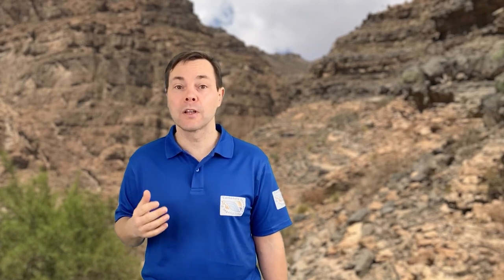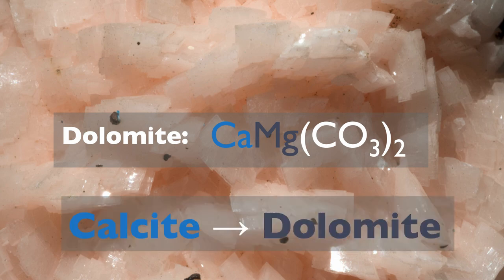You can precipitate dolomite straight from a fluid — that's known as a dolomite cement. But the vast majority, the biggest volume of dolomite you find in the rock record, was not precipitated straight out of a fluid. Instead, it's a replacement of the calcite in a limestone into dolomite. Effectively, you dissolve the calcite and locally re-precipitate a calcium-magnesium ion. So a source of magnesium is important for dolomitization — if you do not have the magnesium, you cannot dolomitize.